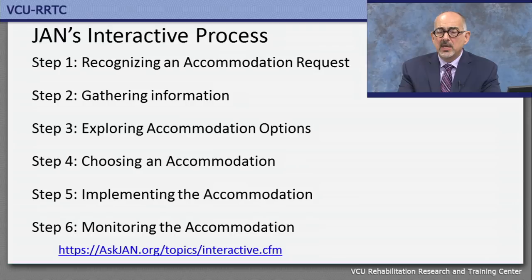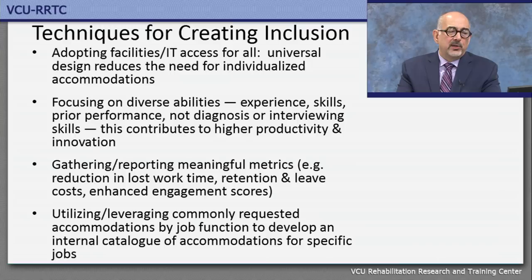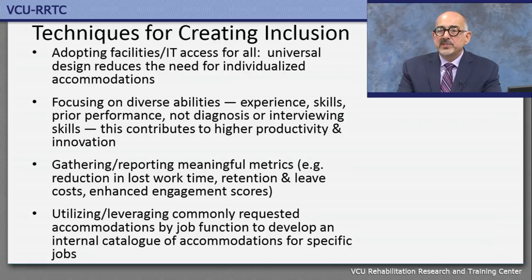Beyond policies and practices, adopt a mindset that your workplace needs to be accessible for all — what we call universal design. This reduces the need for individualized assessment and accommodations. Focus on diverse abilities rather than disability; have a culture and mindset that looks at strengths, builds upon abilities, and doesn't focus on someone's diagnosis, which tells you very little about how they contribute to your workplace.